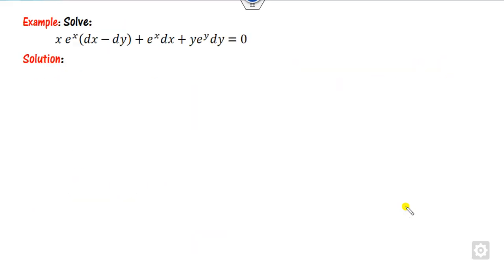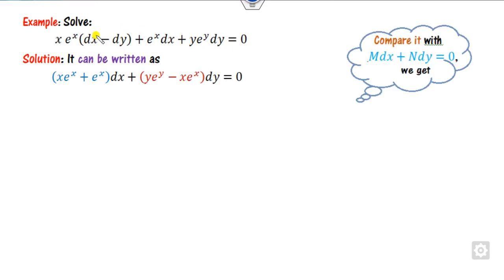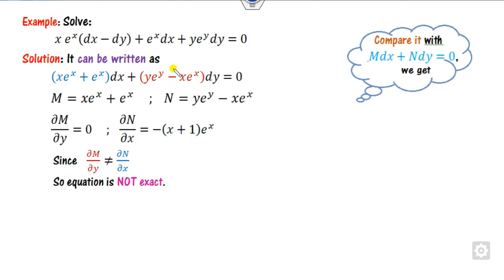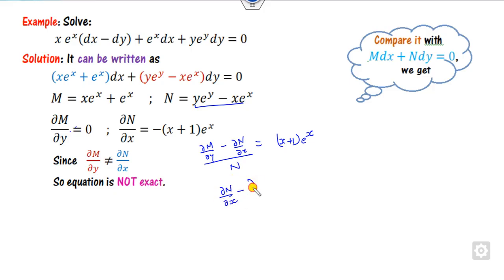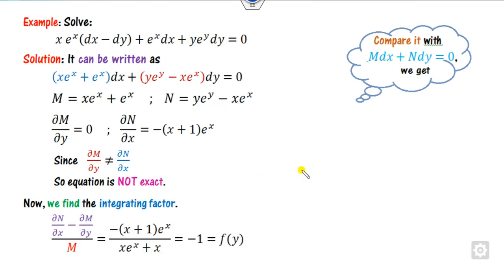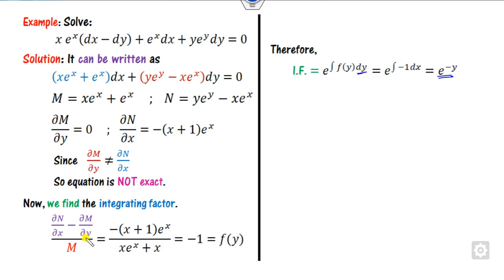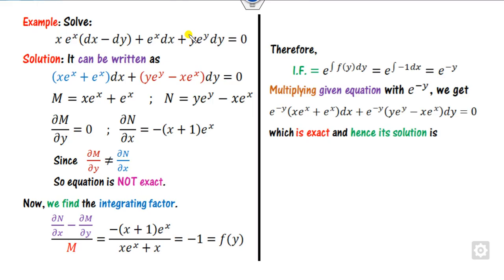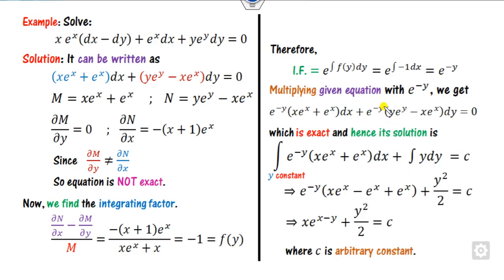For the fifth example, identify M and N and pair the many x and y terms. It is not exact. Subtracting gives x plus 1 times e raised to power x. Writing N on the right side means dividing by N, but N cannot be cancelled — so start from the other partial derivative divided by y, giving minus 1, which is a constant. The integrating factor is e raised to power minus y. Multiplying by e raised to power minus y gives the exact solution, and the term independent of x gives the right answer.